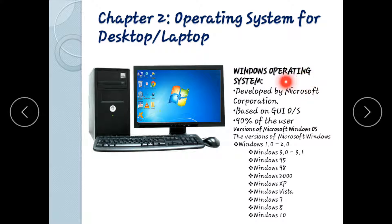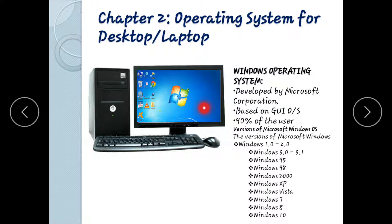Windows operating system: Windows was developed by Microsoft and is a GUI-based operating system. About 90 percent of computers run Windows. It has many versions, from Windows 1.0 up to Windows 10, with Windows 10 being the latest version. Windows 7 is also widely used.